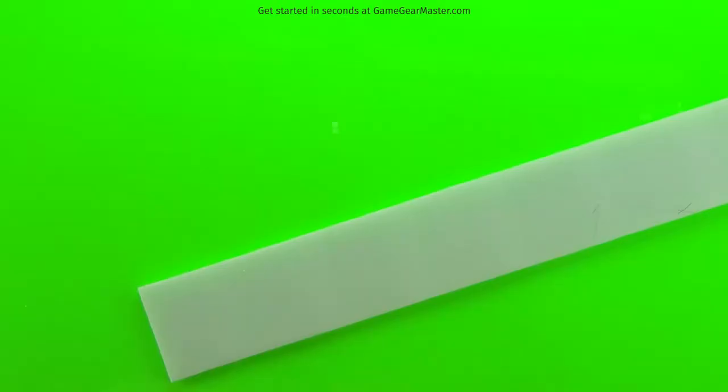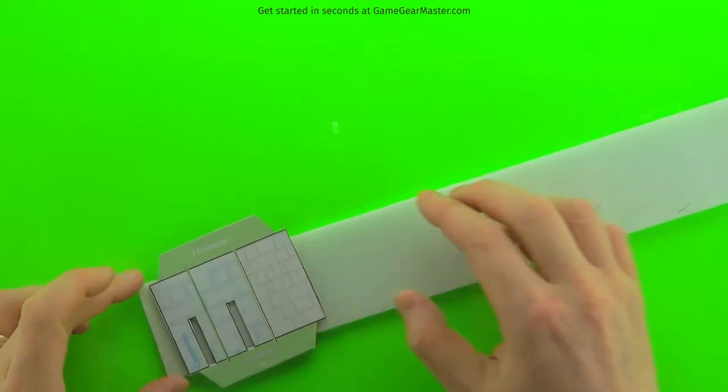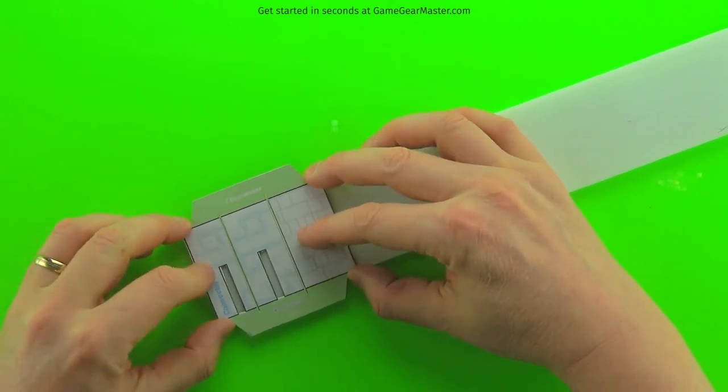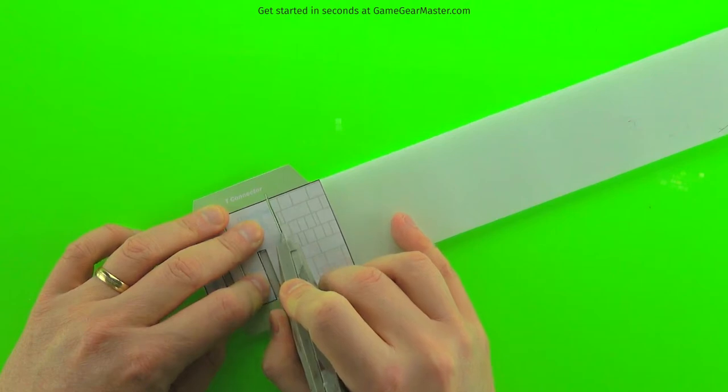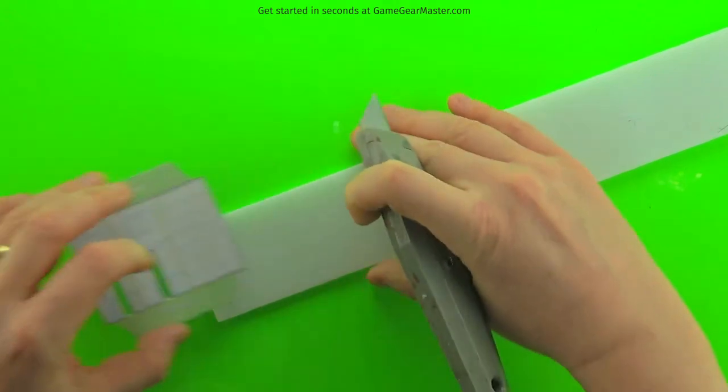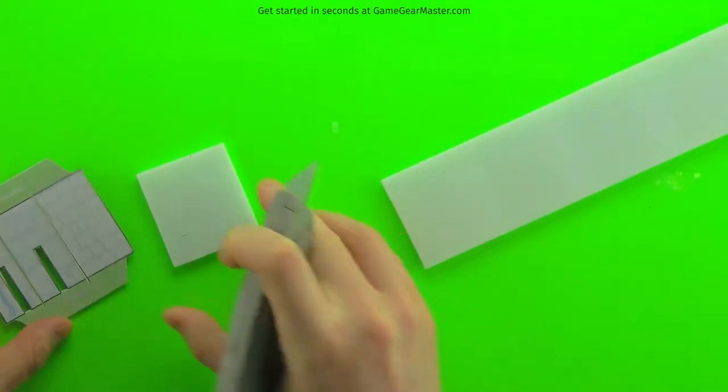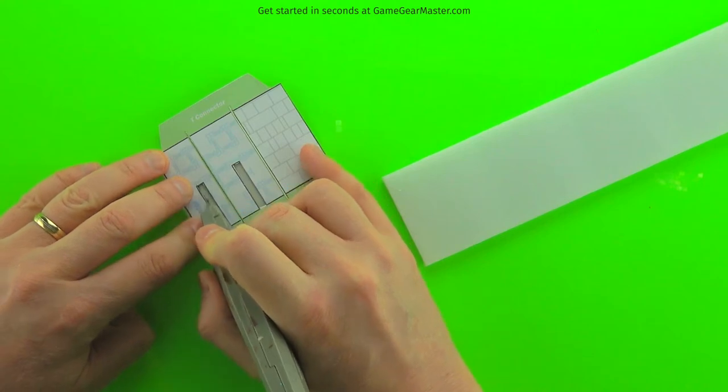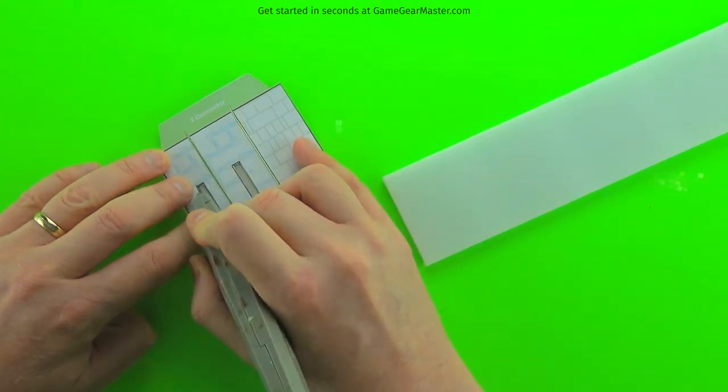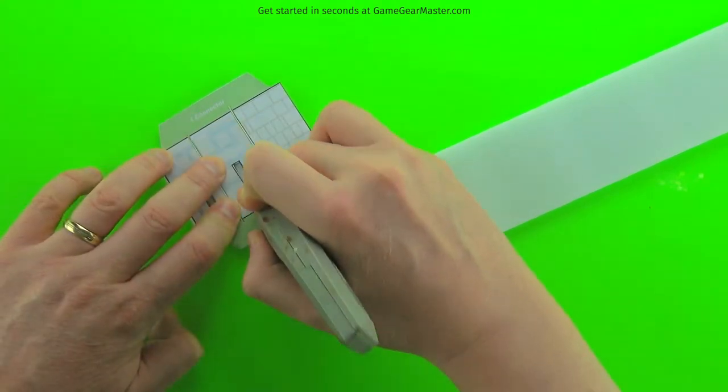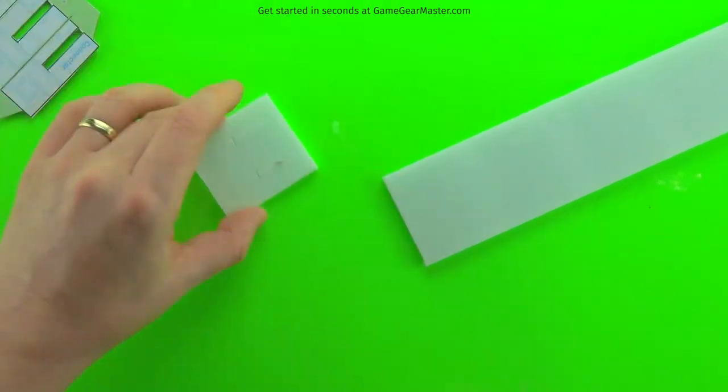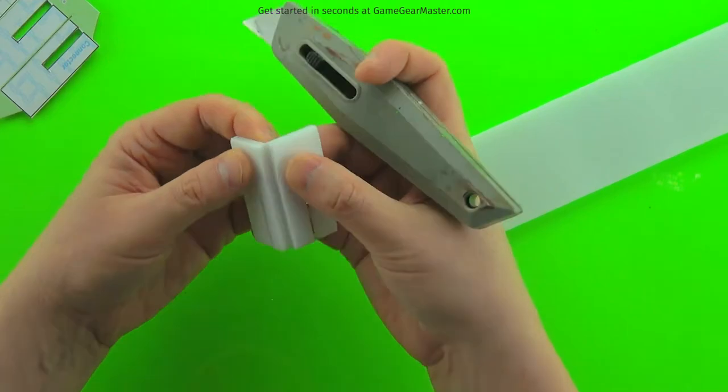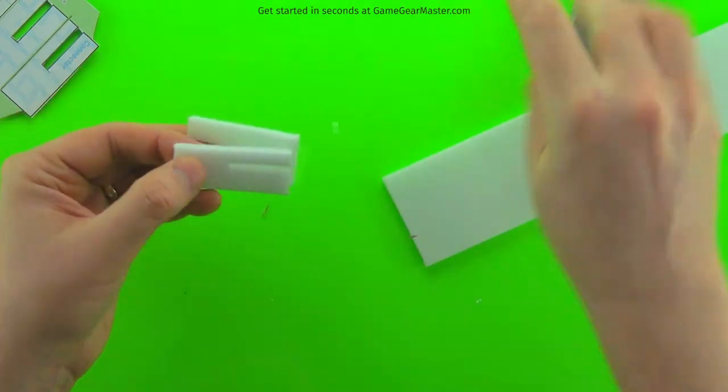The T connector is a similar procedure, except we're going to add one of those exterior pieces. But first we're going to cut those two interior pieces. Those are the part of the template that are in blue.